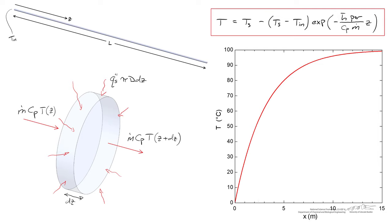If we were to increase the length of the pipe from two meters up to 15 meters, we can more readily observe the asymptotic approach of the average temperature up to 100 degrees C.